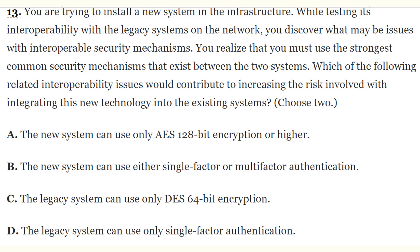Question 13: You are installing a new system and testing its interoperability with legacy systems on the network. You discover potential issues with interoperable security mechanisms and realize you must use the strongest common security mechanisms between the two systems. Which two interoperability issues increase integration risk? Choose two. The correct answers are A — the new system can use only AES 128-bit encryption or higher — and C — the legacy system can use only DES 64-bit encryption.